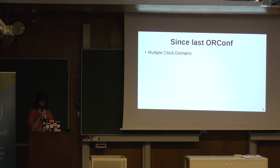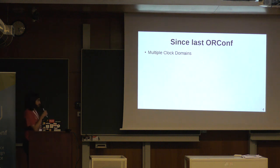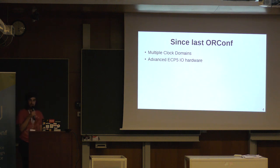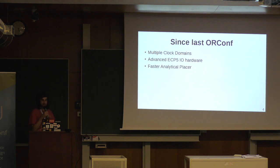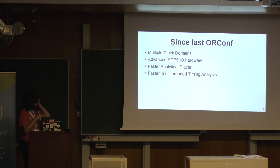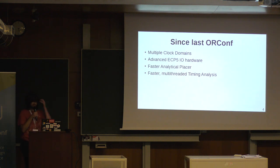Some of the things that have happened since last ORCONF: we've improved the timing analysis to get multiple clock domains, we've added support for the advanced IO hardware in the ECP5 for things like DDR memory, and we've replaced the simulated annealing placer with a faster analytical placer. I've also been working on faster multi-threaded timing analysis — that's not quite upstream yet, but that was part of my university master's project, and that should be another performance improvement for bigger designs.